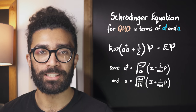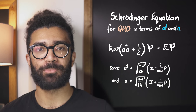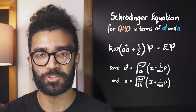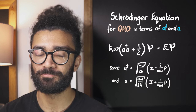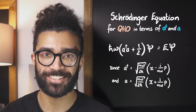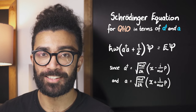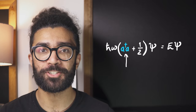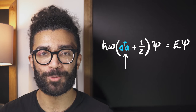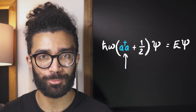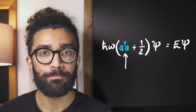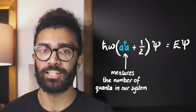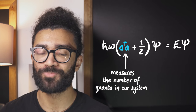Rather interestingly, the Schrödinger equation for this particular scenario — a quantum harmonic oscillator — can be written in terms of the ladder operators. We won't go into full details about this mathematical restatement, but do feel free to pause the video and check that the maths is hopefully correct. The reason this is useful, though, is because this term here — the creation operator followed by the annihilation operator — actually measures the number of quanta of energy in our system.